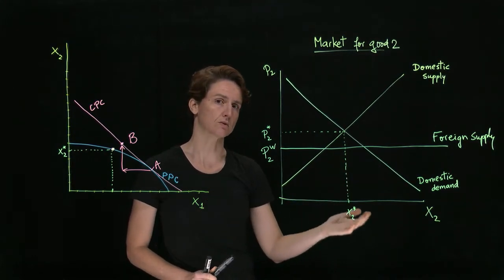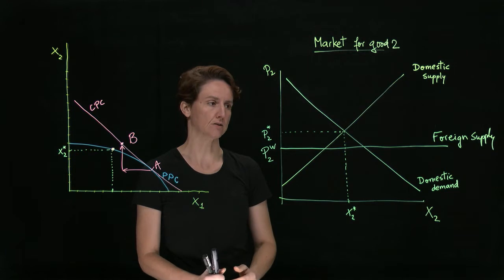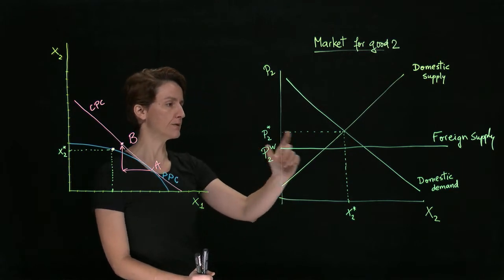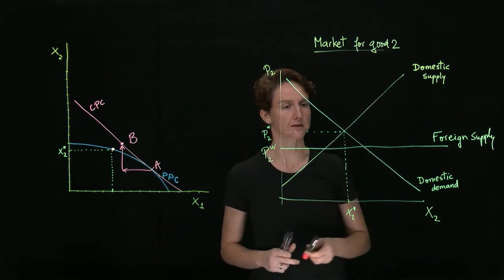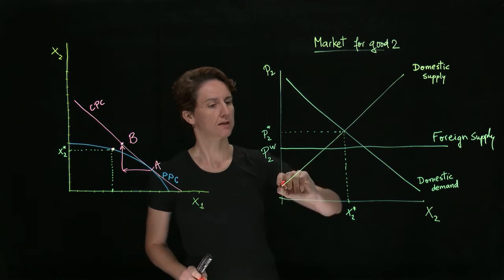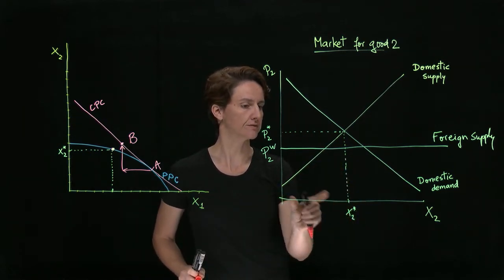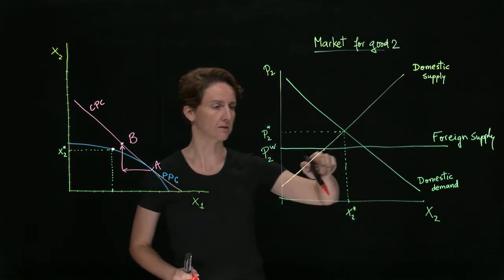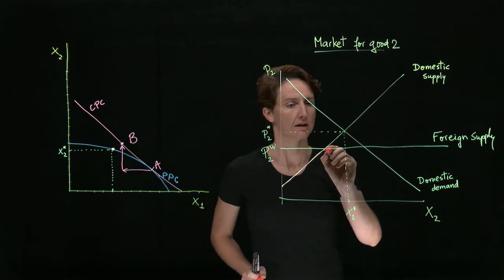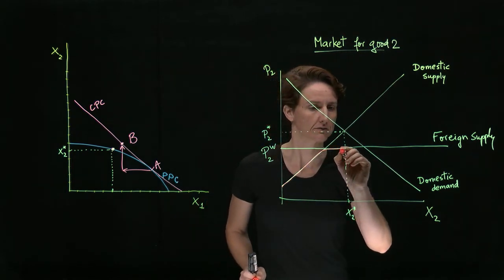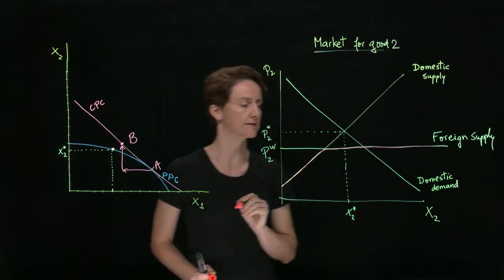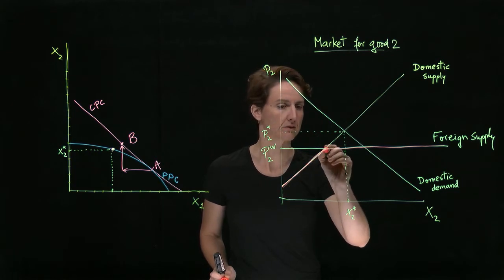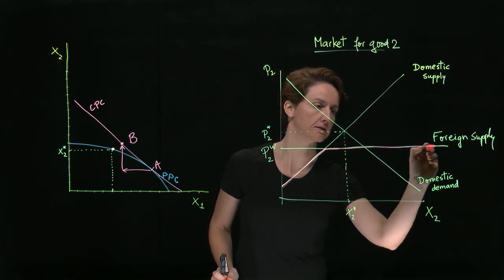Remember, with all of these models, we're assuming that the good is homogeneous, so it's equivalent regardless of who produces it. Well, then the effective supply curve from the domestic consumers' perspective will be on the first few units, the first segment. The good is available at the lowest price from domestic producers, after which it is available at the lowest price from foreign producers. So, the effective supply faced by domestic consumers is the one marked here.